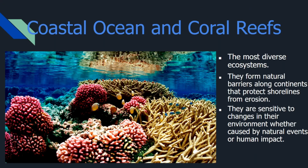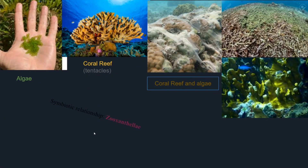Moving on to coastal ocean and coral reefs. Coral reefs are located by the neritic zone and are the most diverse ecosystems on Earth. They form protective barriers along continents that protect shorelines from erosion. They are sensitive to changes in their environment caused by natural events or human impact, especially changes in pH or temperature. A key symbiotic relationship you need to know here is between coral reefs and algae.